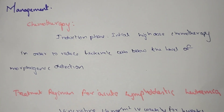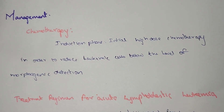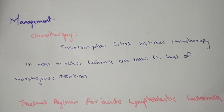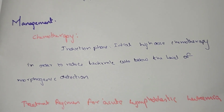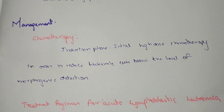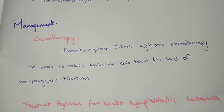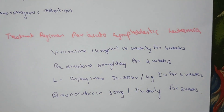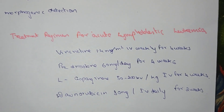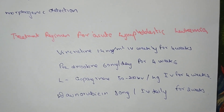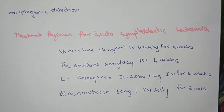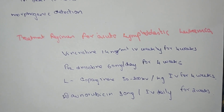The management of acute leukemia begins with the induction phase — the initial high-intensity chemotherapy phase — in order to reduce the leukemia cell burden below the level of morphological detection. Chemotherapy is the primary treatment.